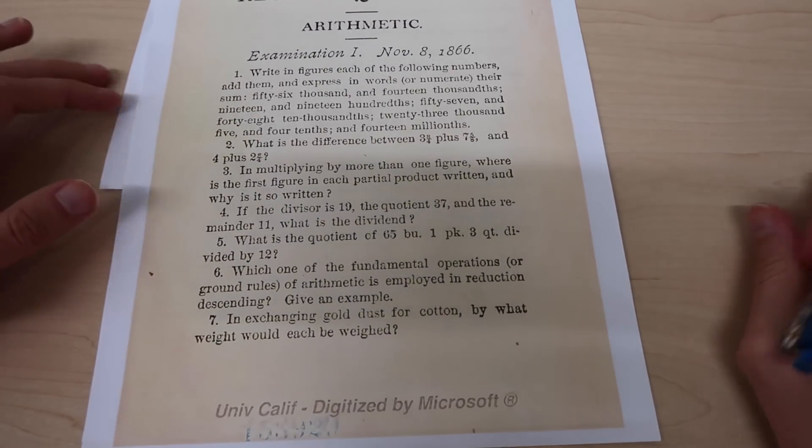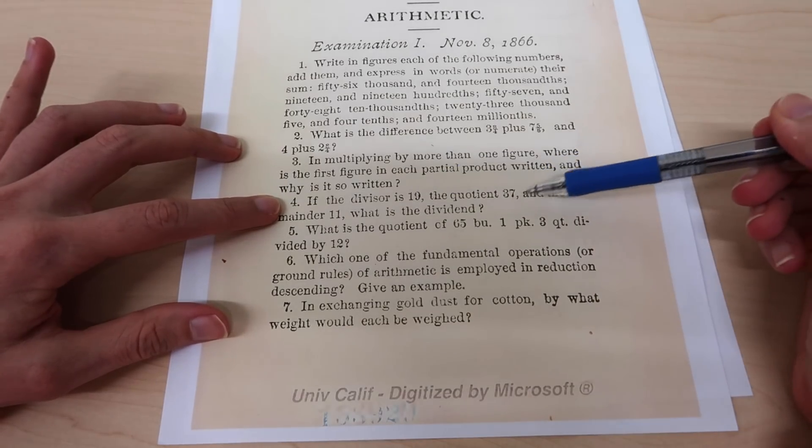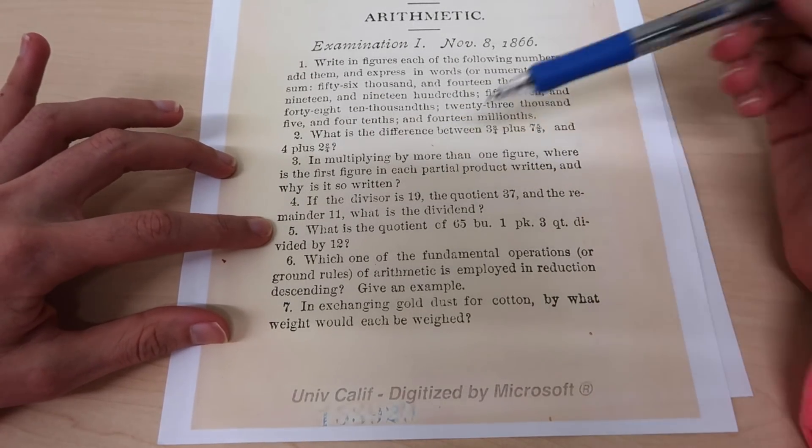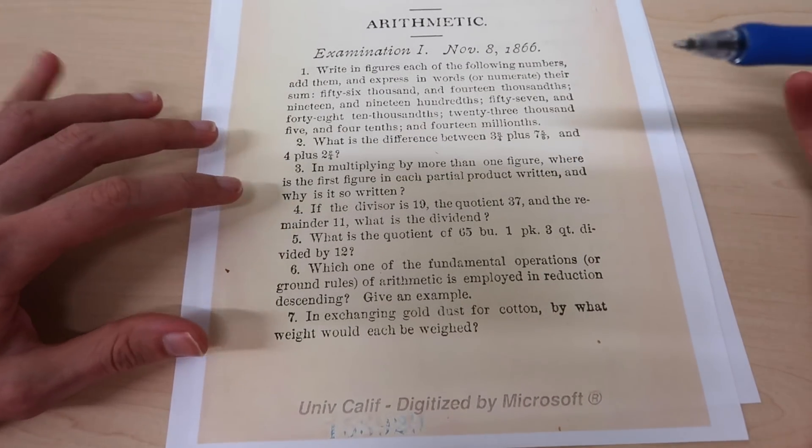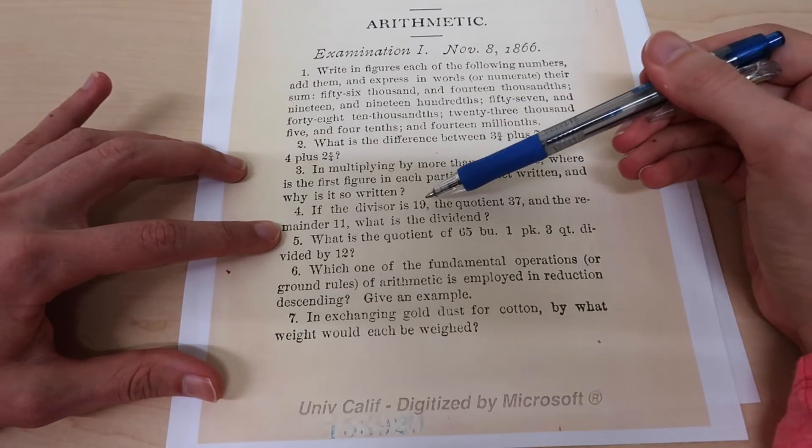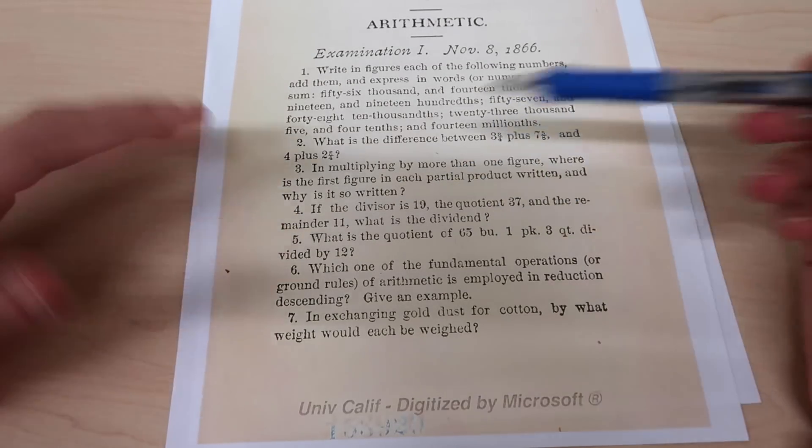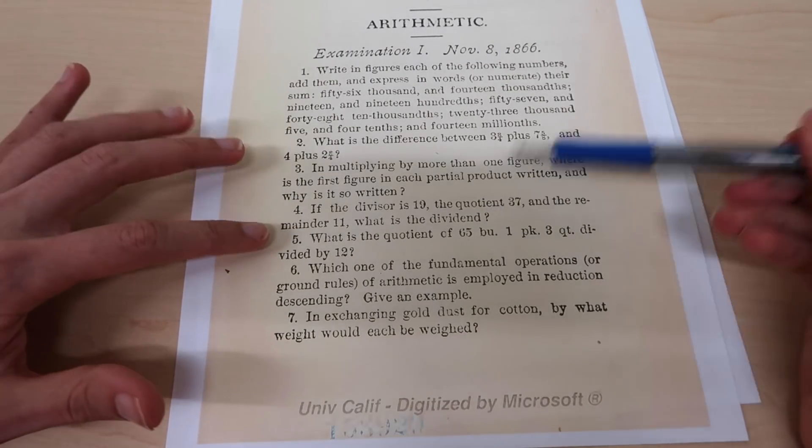Number four: if the divisor is 19, the quotient 37 and the remainder 11, what is the dividend? So the dividend is the number to be divided by something. To work backwards and find what the dividend is we'd do 19 times 37 plus 11.